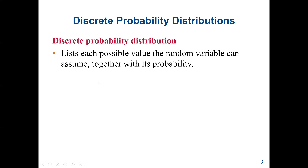To find the mean of a discrete probability distribution, we multiply each random variable value by its probability, then sum all the products. The formula is: mu equals the sum of x times P(x). Each value of x is multiplied by its corresponding probability, and then the products are added together.